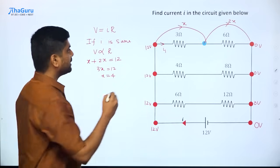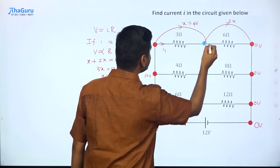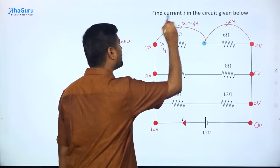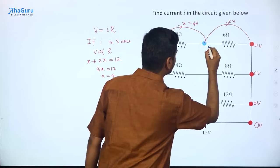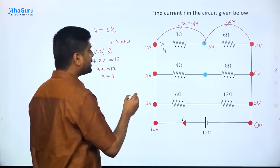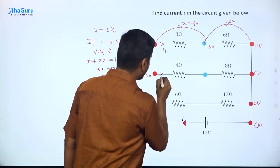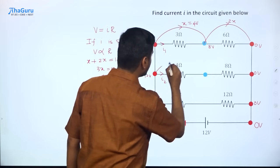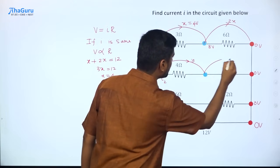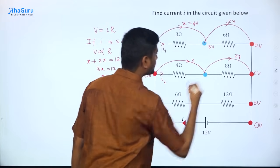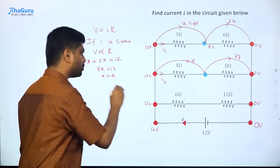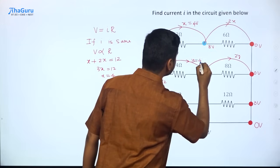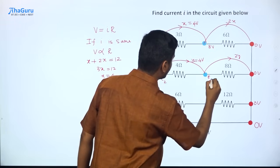Once we've figured out that x equals 4 volts, it's easy to figure out the potential at the midpoint: 12 minus 4 equals 8 volts. Similarly, let's figure out the potential drops in the next branch. Assuming current I2, since 8 is 2 times 4, if the potential drop here is y, the drop across the other resistor is 2y. We know y plus 2y equals 12, which gives y equals 4 volts, so this midpoint also has a potential of 8 volts.